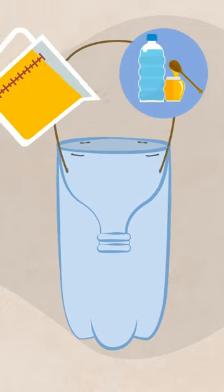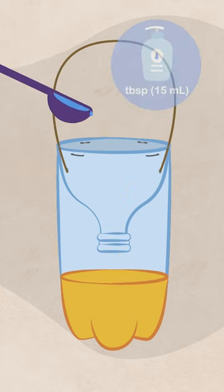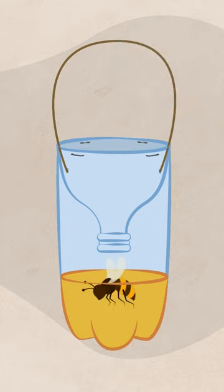Pour a little bit of honey or sugar water into the trap to make a shallow puddle at the bottom. Then add about a tablespoon, 15 milliliters, of dish soap. This will kill any bees or wasps that enter the trap.